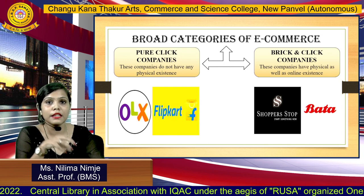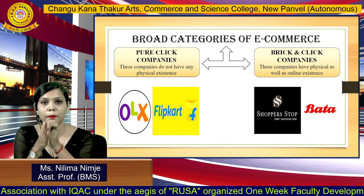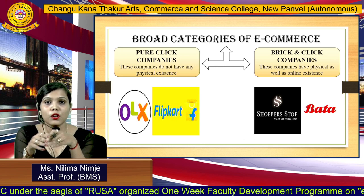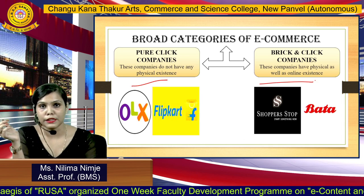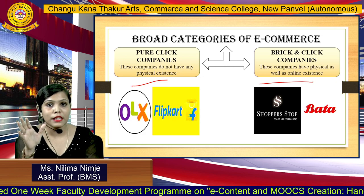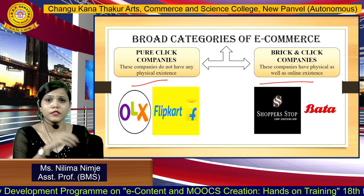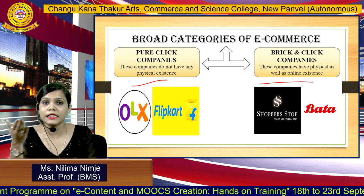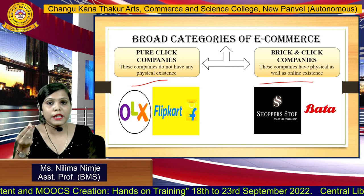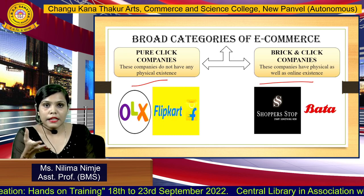Now let us look at the broad categories of e-commerce. This categorization is done on the basis of online presence and offline presence. The major categories are pure click companies and brick and click companies. Pure click companies are those that do not have any physical existence — they only have an online presence. Examples include search engines like Yahoo, commerce sites like Amazon, content sites like Encyclopedia, and also OLX and Flipkart.